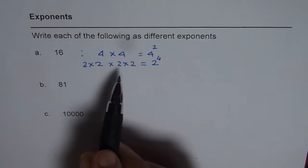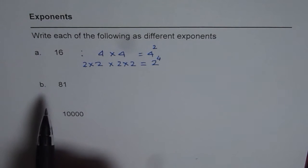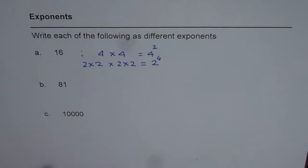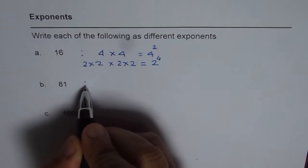Now I think you have understood the concept. You should try to pause the video and write down 81 and 10,000 as exponents of two different numbers.